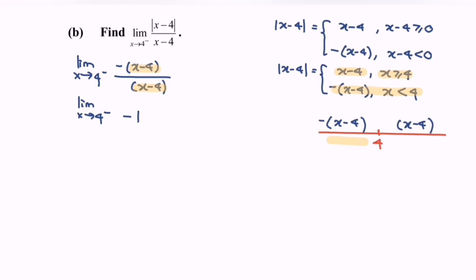As a conclusion, the limit when x approaches 4 from the left for the function modulus of (x minus 4) over (x minus 4) gives a value approaching negative 1.